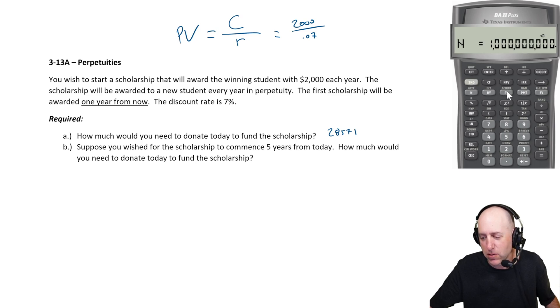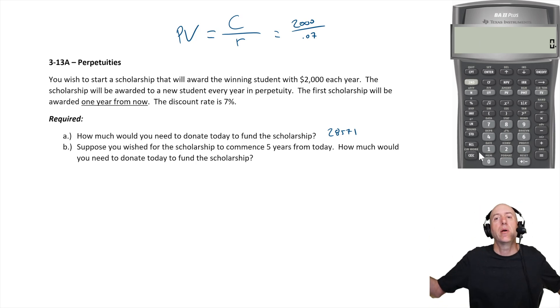And then you compute PV: 28,571. You can see 28,571, it's the same answer. So just wanted to show that you could do this in a financial calculator. You just put a billion as the time frame and it works out to the same. Okay, suppose you wanted the scholarship to commence five years from today.